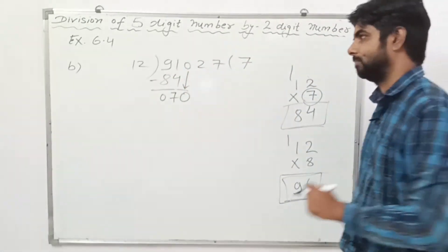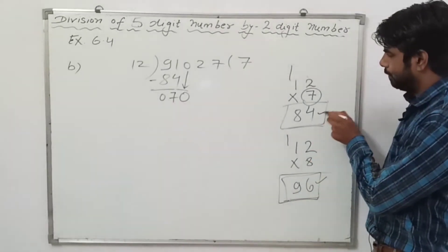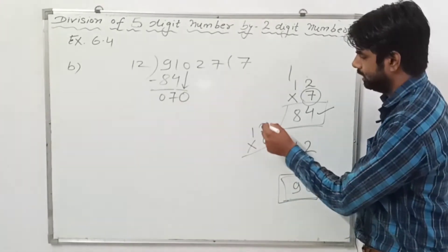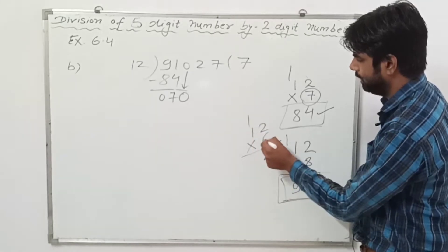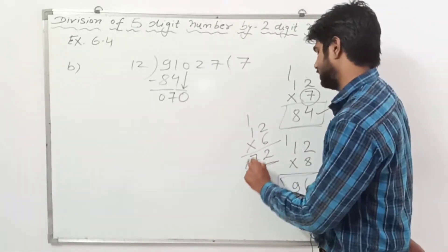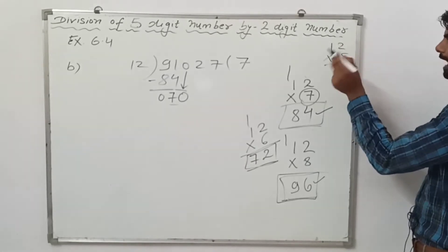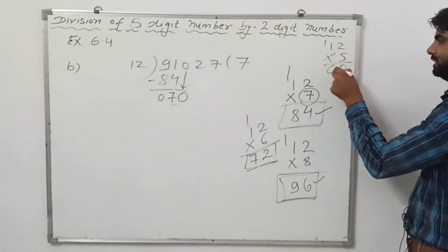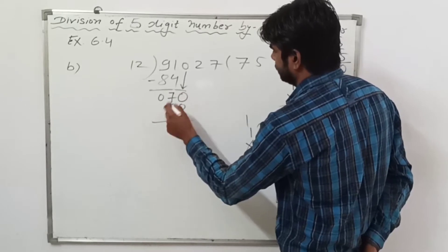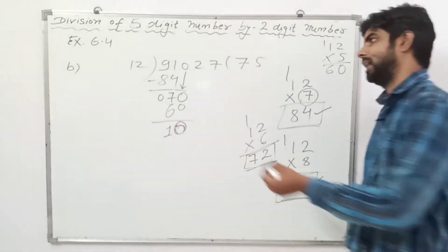Now again we read the table of 12. Up to 8 we get 96, up to 7 we get 84. Let's try 6: 12 times 6 is 72, but 72 is greater than 70, so we try 5. 12 times 5 is 60. Subtracting: 0 minus 0 is 0, 7 minus 6 is 1 — so we get 10.